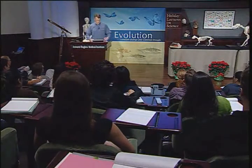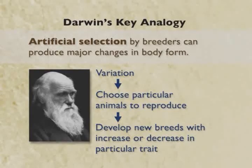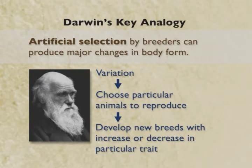Welcome back, everybody. Sean gave you a great introduction to both Charles Darwin and the idea of natural selection. Darwin originally coined the term natural selection by analogy to a process of artificial selection well known by human breeders. Human breeders take natural variants that occur all the time, choose traits that they're particularly interested in, breed selectively from the plants or animals that show those traits, and by doing so develop new breeds that can look very different from the original animals.